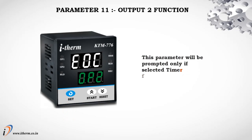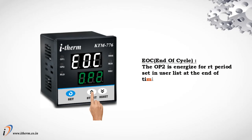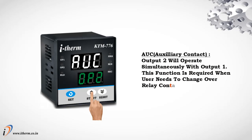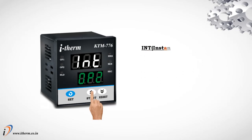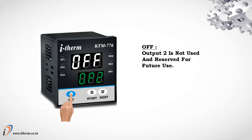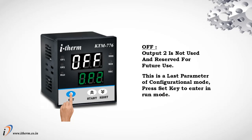Parameter 11: Output 2 Function. This parameter will be prompted only if the selected timer function is other than Cycle 3. End of Cycle: Output 2 is energized for the RT period set in the user list at the end of the timing cycle. Auxiliary Contact: Output 2 will operate simultaneously with Output 1, useful for changeover relay contacts. Instant Contact: Output 2 operates immediately when the timer starts and remains in that state until the start of the next cycle. Off: Output 2 is not used and reserved for future use. This is the last parameter of Configuration Mode — press Set key to enter Run Mode.